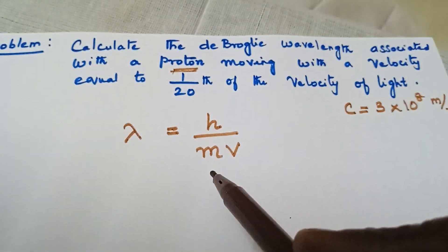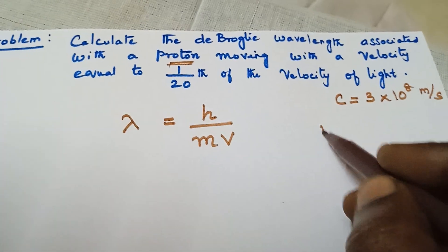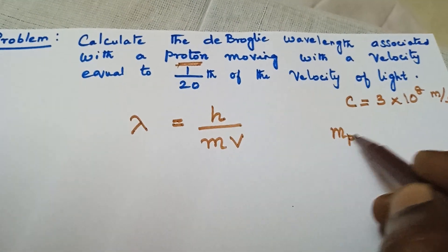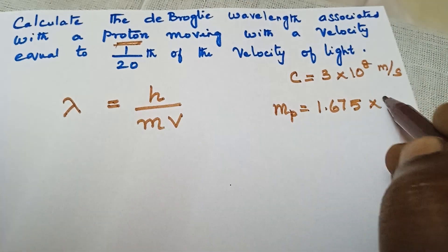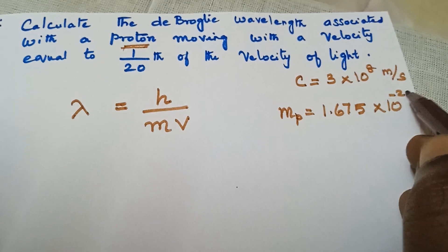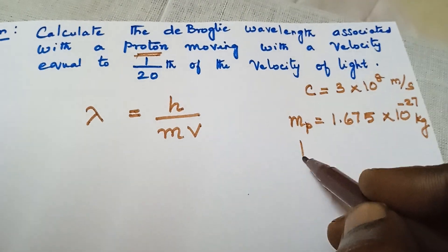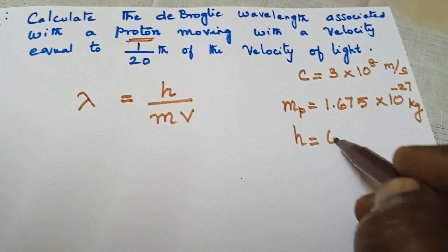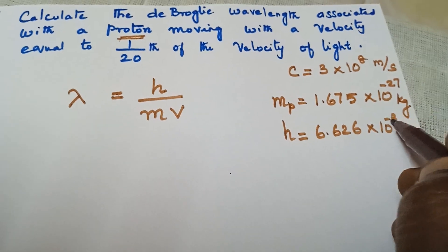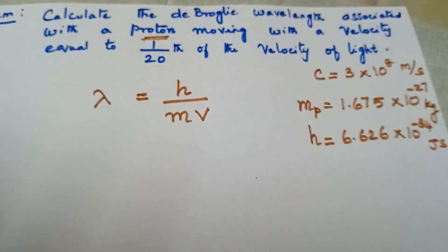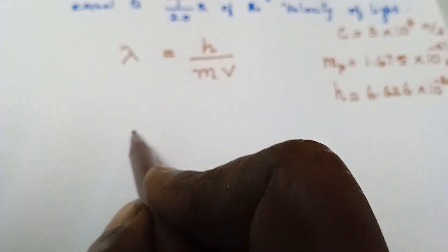The mass of the proton is 1.675 × 10⁻²⁷ kg, and Planck's constant value is 6.626 × 10⁻³⁴ Joule·second. Substituting the values of H, M, and V here: